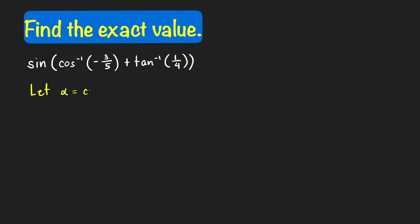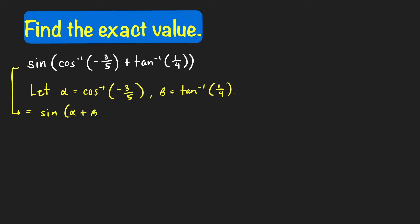Let alpha equal cosine inverse of negative 3 over 5, and let beta equal tangent inverse of 1/4. Therefore we can write our expression as sine of (alpha + beta), and using the sum identity for sine, this equals sine(alpha)·cosine(beta) plus cosine(alpha)·sine(beta).